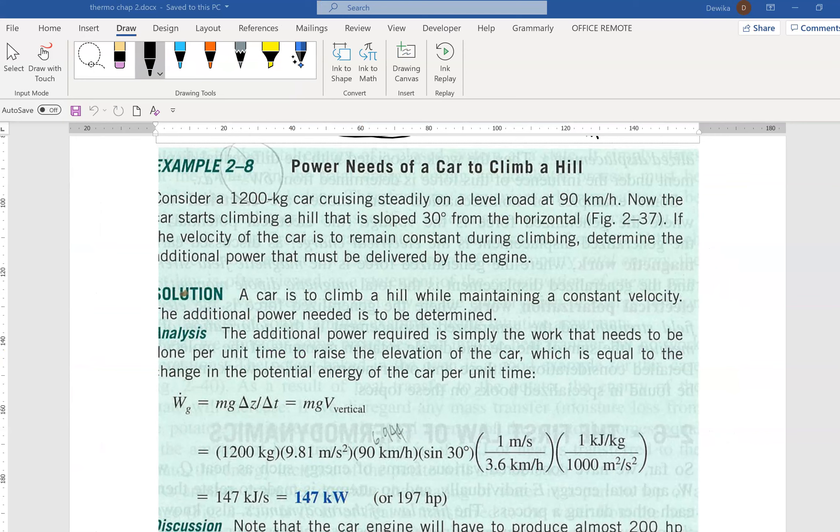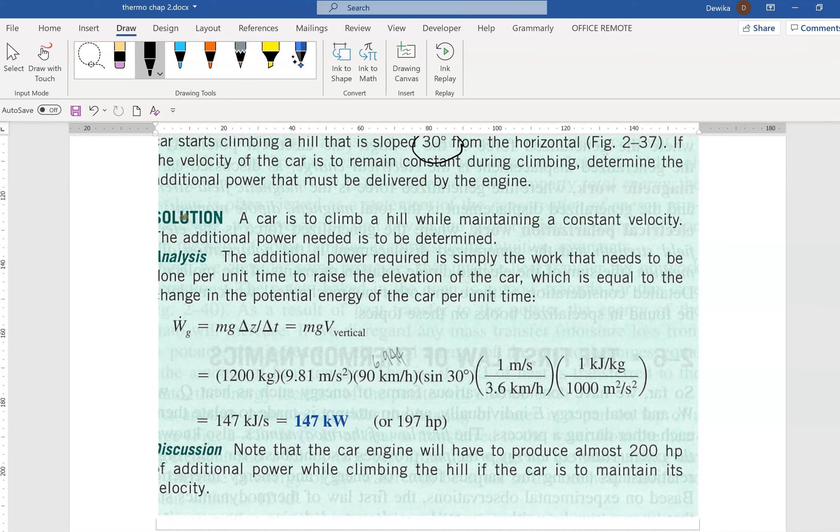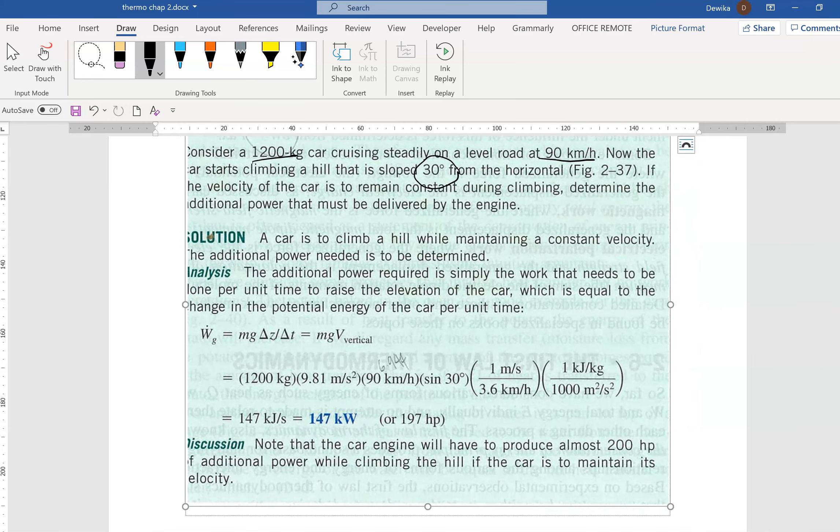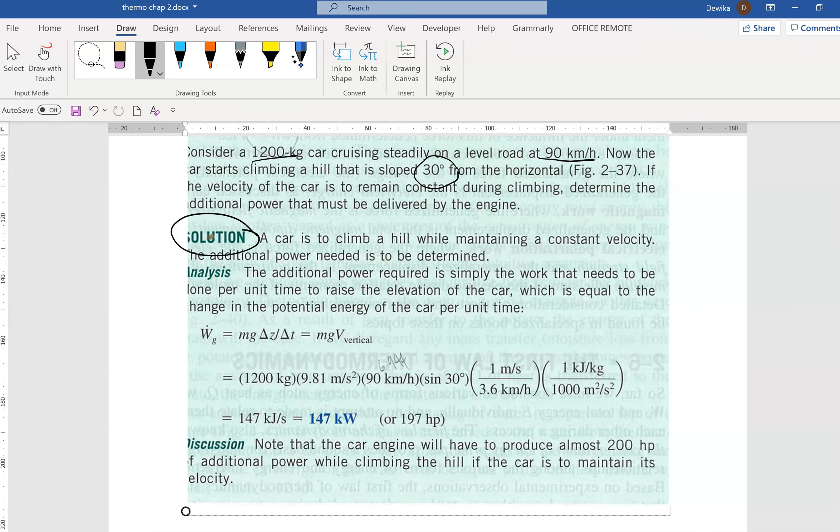We're going to move on to power needs of a car to climb a hill, example 2.8. Consider a 1200 kg car cruising steadily at 90 km/h. The car starts climbing a hill at a slope of 30 degrees from the horizontal.